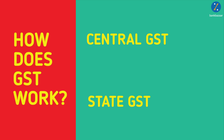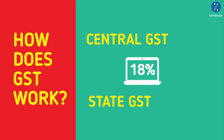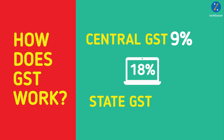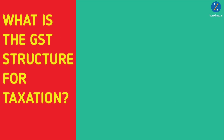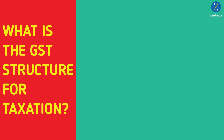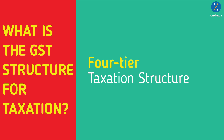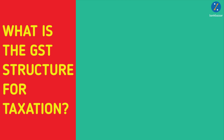So for example, if the GST on laptops is 18%, then the central GST is 9% and the state GST is also 9%. What is the GST structure for taxation? The GST Council has finalized a four-tier structure for taxation of goods and services.